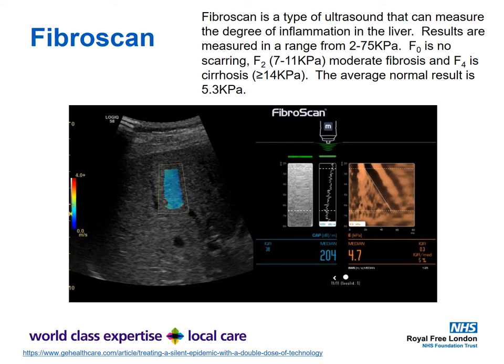Fibroscanning is a relatively new technique providing a bedside point-of-care ultrasound to detect the degree of inflammation in the liver, measured in 2 to 75 kilopascals. Classification is as follows: F0 is no scarring, F2 is 7–11 kilopascals indicating moderate fibrosis, and F4 is cirrhotic at greater than 14 kilopascals. A normal result is around 5.3 kilopascals. The example shown has a median score of 4.7 kilopascals, representing a normal liver.